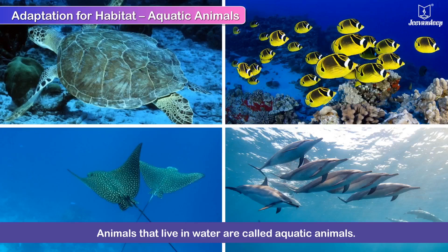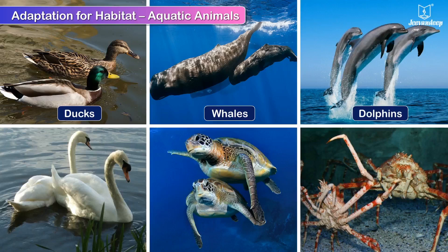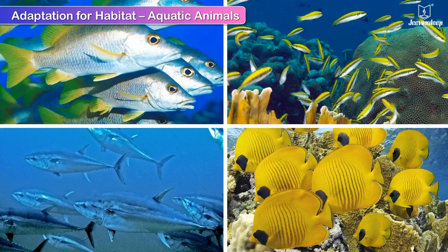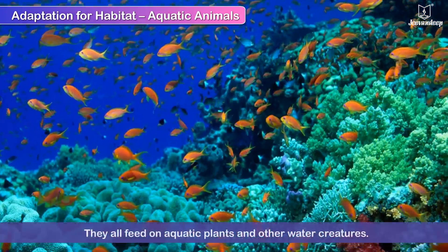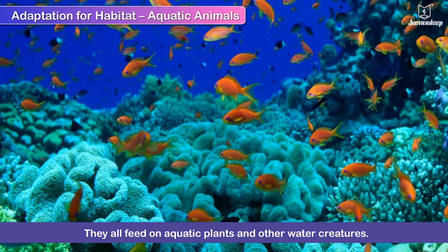Animals that live in water are called aquatic animals. Ducks, whales, dolphins, swans, turtles, crabs and different kinds of fish are all aquatic animals. They all feed on aquatic plants and other water creatures.